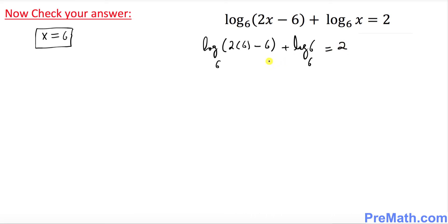So right now you can write log of 2 times 6 is 12 minus 6 with base 6 plus log of 6 with base 6. So we're going to see, is it equal to 2? So log of 12 minus 6 is 6, with base 6, plus log of 6 with base 6. Does this equal to 2?